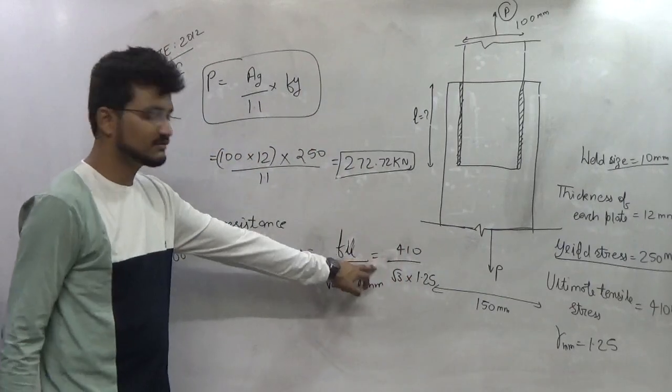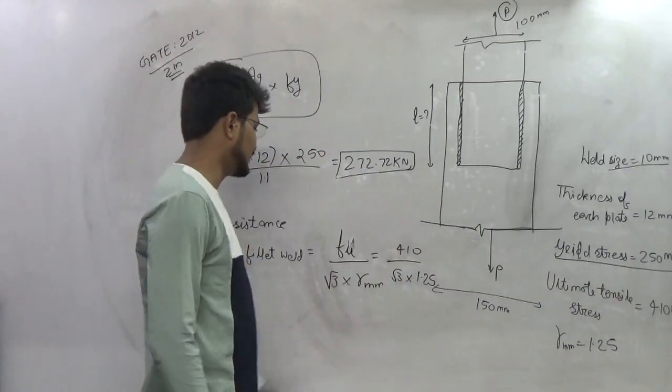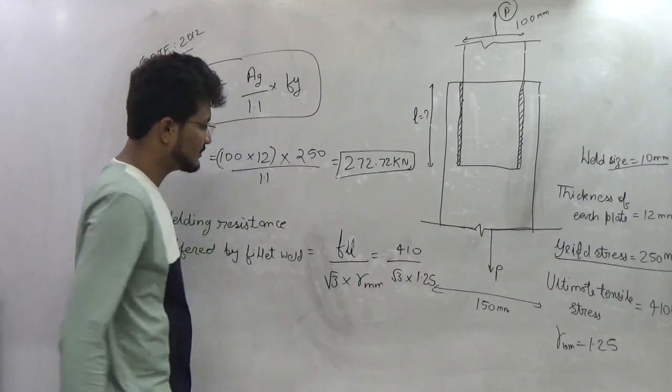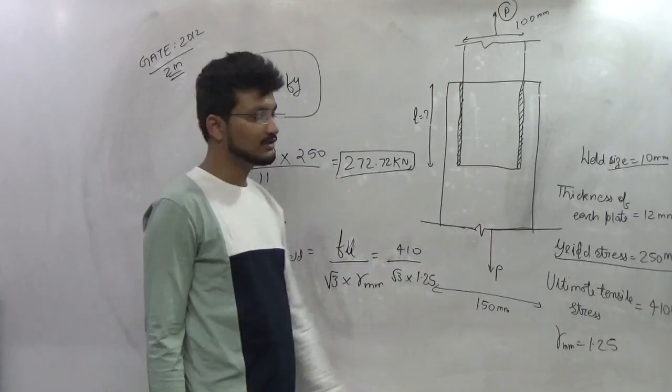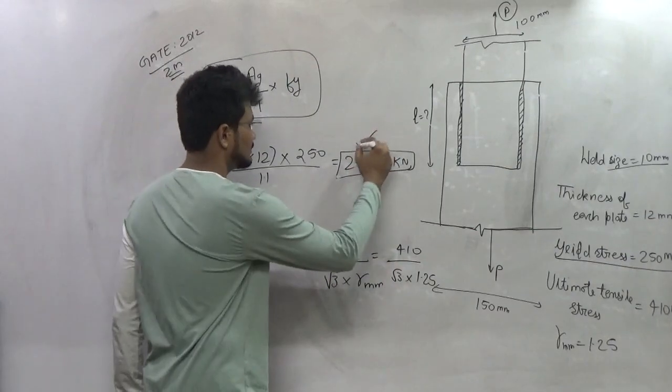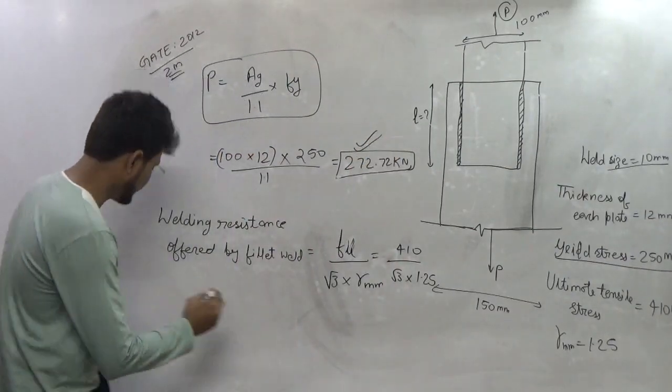So this much stress will be developed in the fillet weld. Now this stress multiplied by the area of the fillet weld will be equivalent to the 272.72 kN.